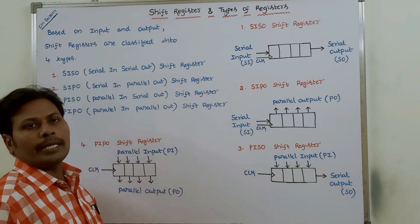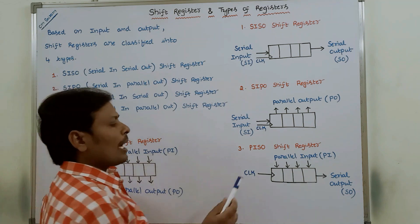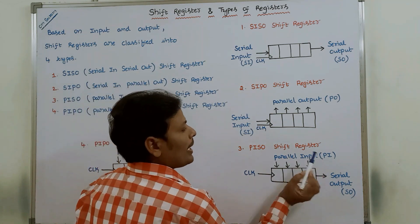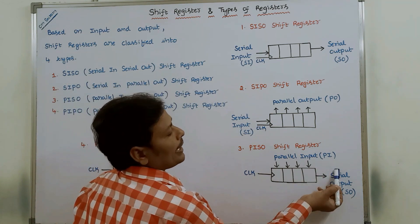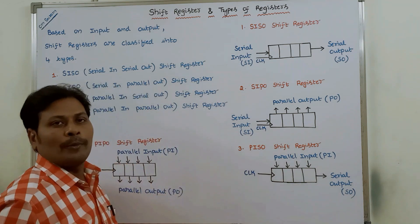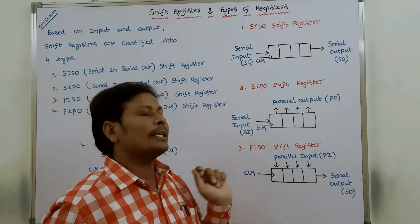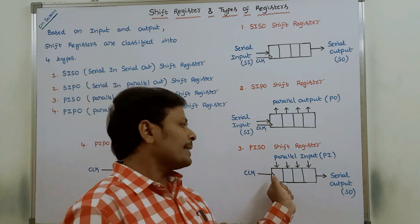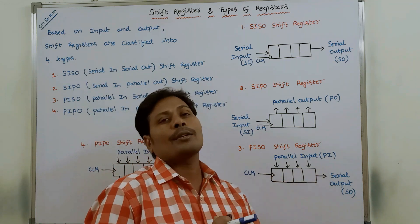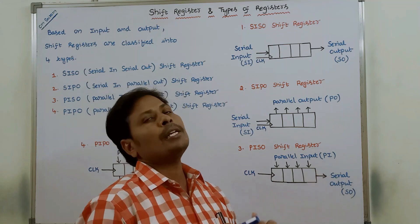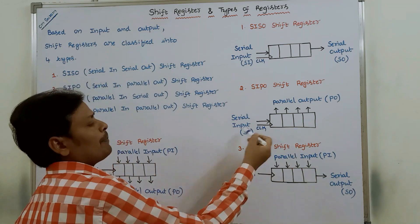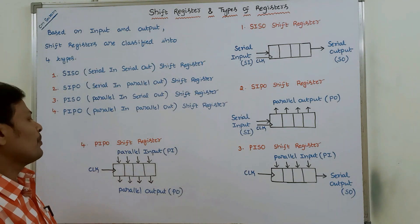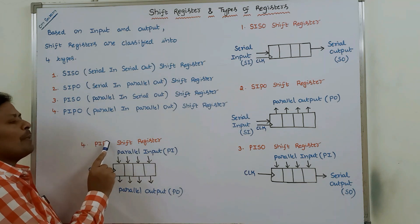A PISO — parallel in serial out shift register — allows data to be entered in parallel fashion and leaves from the shift register in serial fashion. That means data can be entered within a single clock pulse and the data bits leave out from the shift register in serial fashion bit by bit.